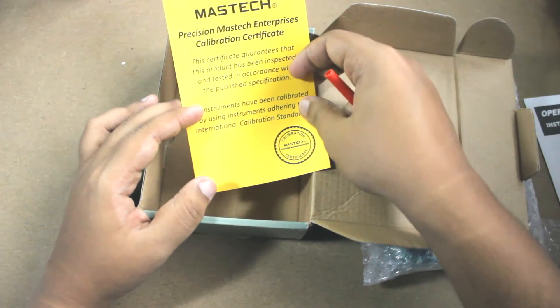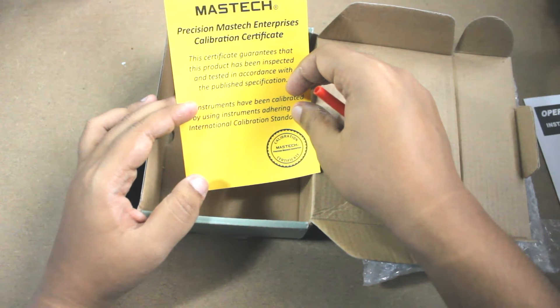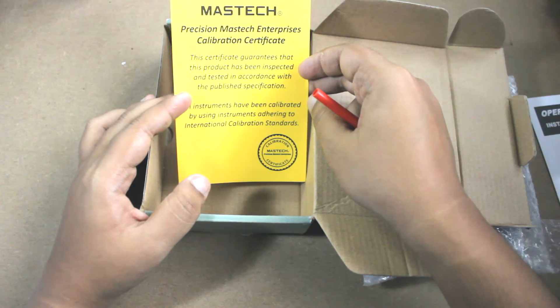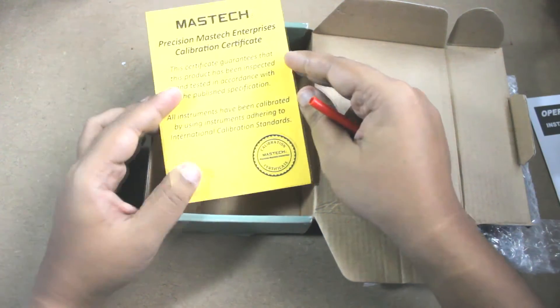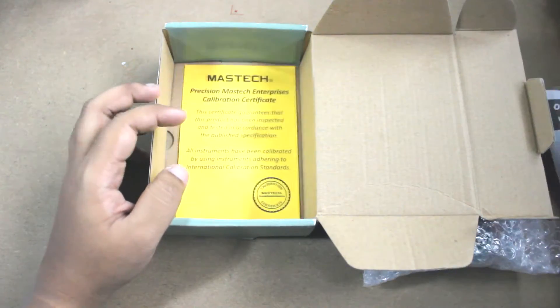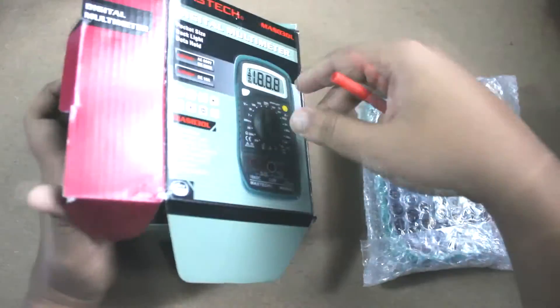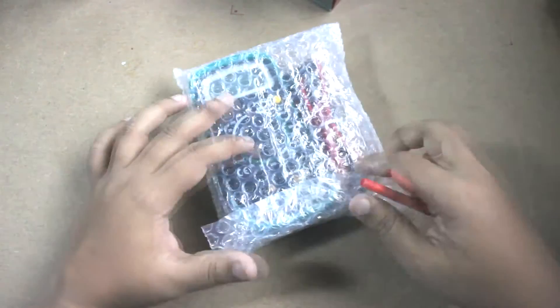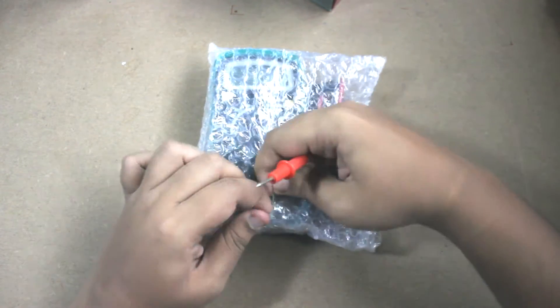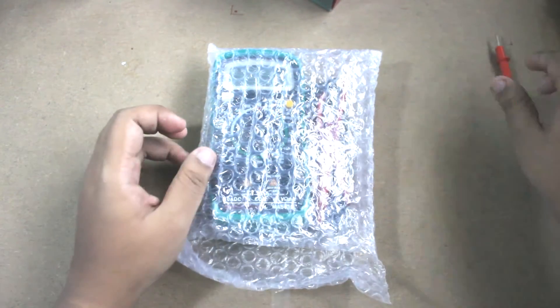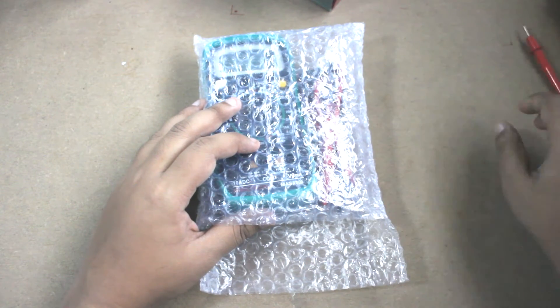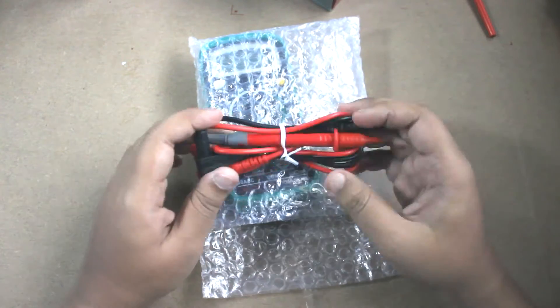This is the Mastek calibration certificate. It says that this certificate guarantees that the product has been inspected and tested in accordance with the published certification. This is the calibration certificate with the certified logo of Mastek. Let's break the seal here. Yes, it is already open actually.